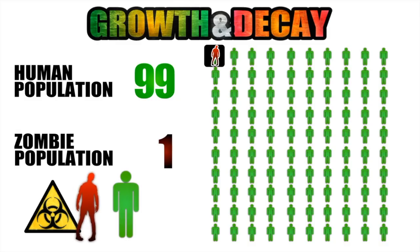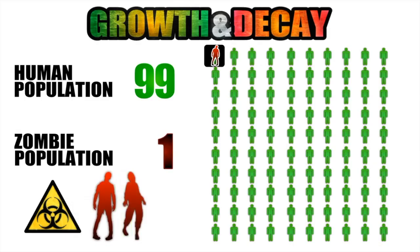And now here comes the chaos. That first infected person will inevitably infect a second person. So now our zombie population has grown to two infected individuals while our human population has dropped to 98.